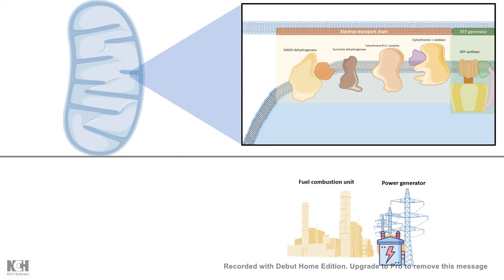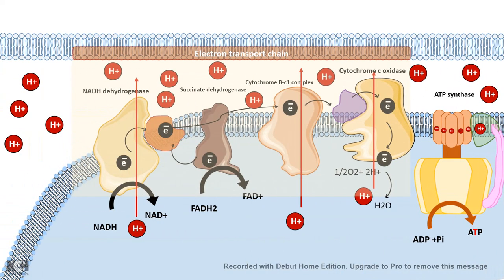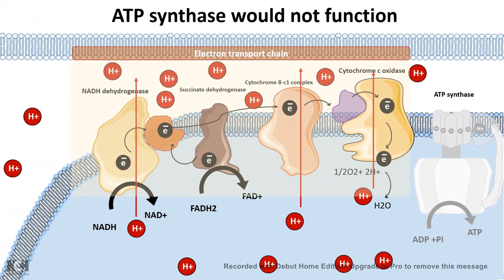ATP generation is totally dependent upon the proton gradient. If the gradient is somehow dissipated, ATP won't be generated. There are compounds known as uncoupling agents or uncouplers that can break the link between these two processes — tearing apart electron transport from ATP production. Certain uncouplers such as 2,4-DNP allow hydrogen ions to enter the mitochondrial matrix via diffusion, bypassing the normal pathway.